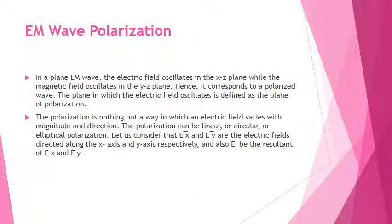Let us see something about EM wave polarization. In EM wave polarization, we are going to discuss about linear polarization and circular polarization. In a plane wave, the electric field oscillates in a plane. The plane in which the electric field oscillates is defined as the plane of polarization. The polarization varies with magnitude and direction.